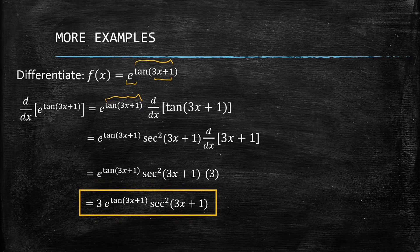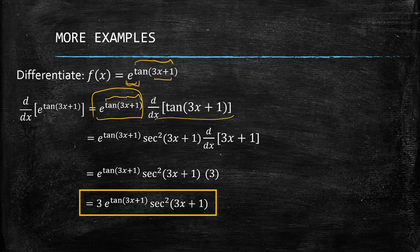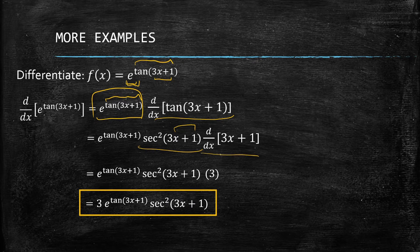If it's still confusing, here's the breakdown: first, get the derivative of e, which is just e to the power of u. Then get the derivative of tangent, which is sec squared. Then get the derivative of the angle — the inner function — which is 3. That's how you arrive at the answer.